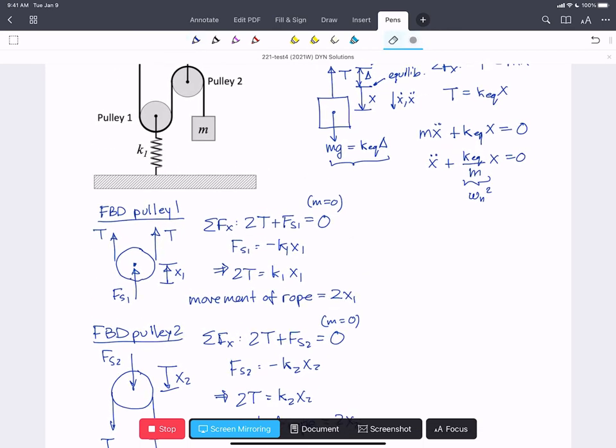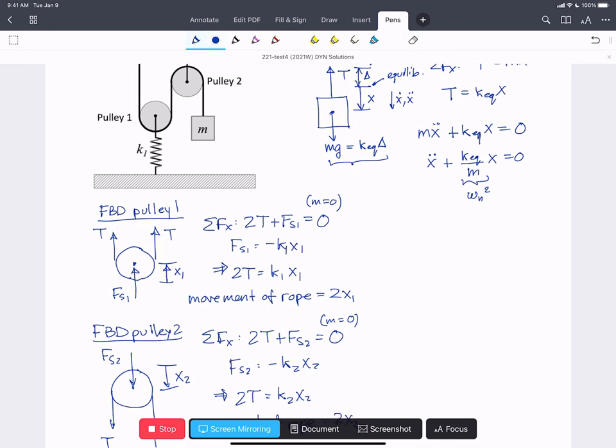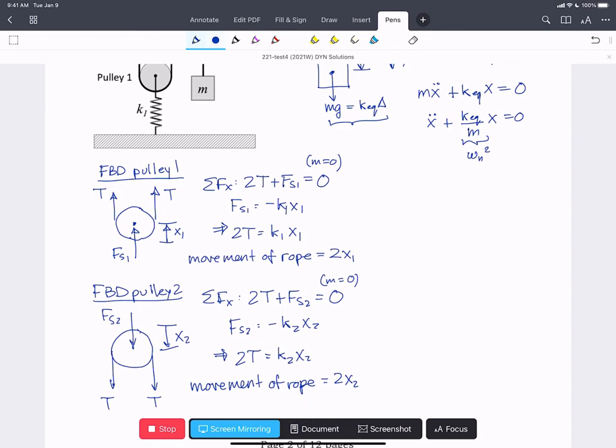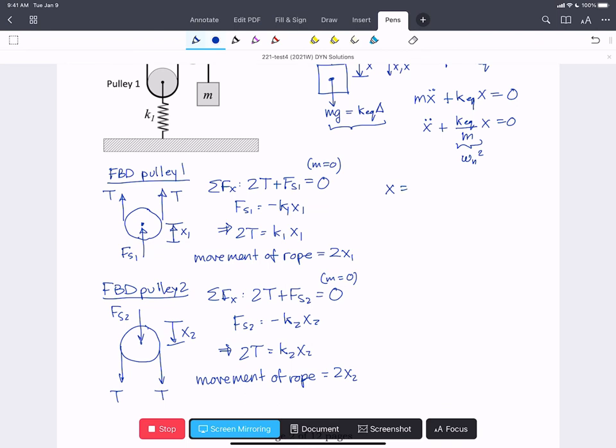So when we come back up here and look at the distance the mass has traveled, well, it's attached to an inextensible rope. So if we've gotten 2x one of slack from the motion of pulley one, and 2x two of slack from the motion of pulley two, then the distance x is going to be 2x one plus 2x two. That gives us the motion of the mass given the motion of the pulleys.